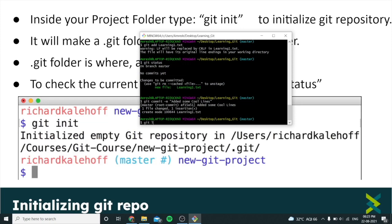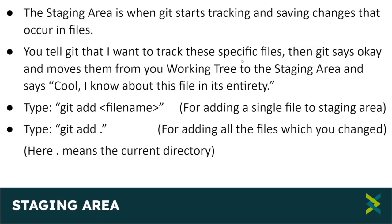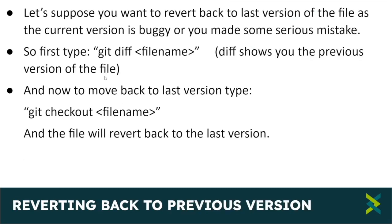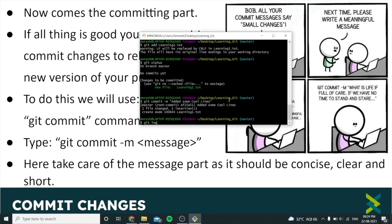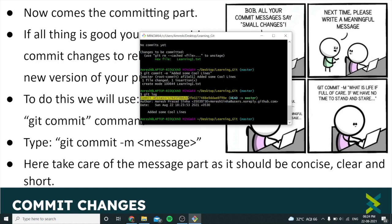Now press 'git log'. What this command does is show all the commits which we have done so far. As you can see, there is one commit here — it shows the author name, the email attached to it, and the changes which we have done.